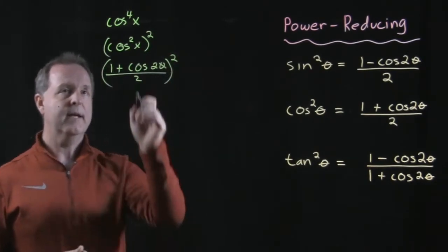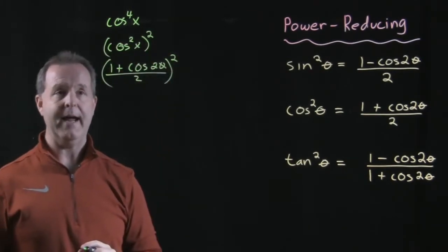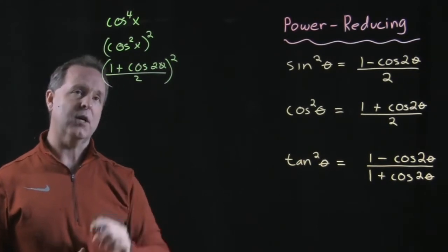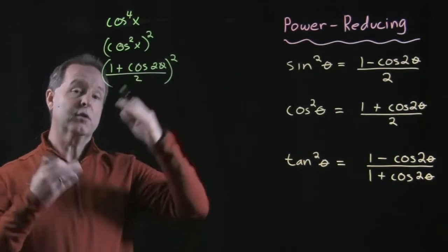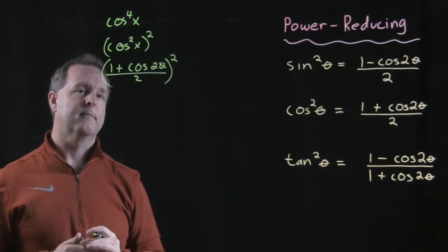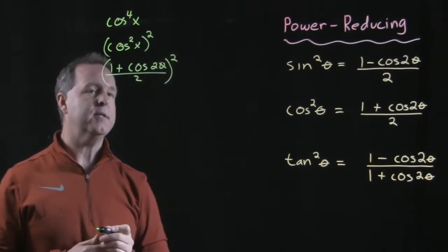All right. So to begin with I had a cosine to the fourth of x. I rewrote that as cosine squared of x squared. From there I used my power-reducing formula.